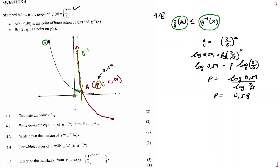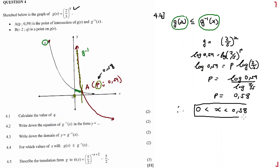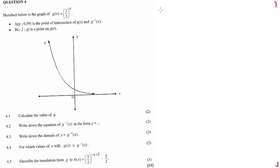So therefore our answer is going to be: 0 less than X less than 0.58. Our answer lies somewhere between 0 and P, where G is below and the inverse function is above.